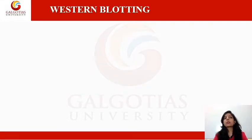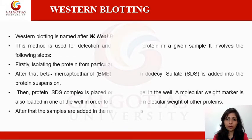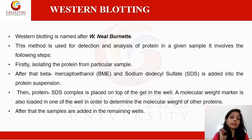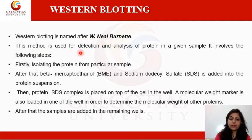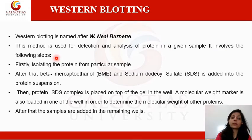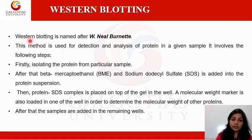The first type of blotting technique is western blotting. Western blotting is named after W.N. Burnette, the scientist who first performed this blotting technique. This method is used for the detection and analysis of protein in a given sample, and involves the following steps.